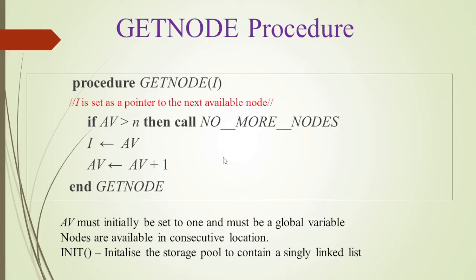The av variable starts at 1 and it must be a global variable. In array procedures, av is used as a pointer for both get node and return. Since both procedures use av, it must be global. The nodes are available in consecutive locations initially, so the get node procedure is straightforward — we just take the next node. We also need an init procedure to initialize the storage pool.